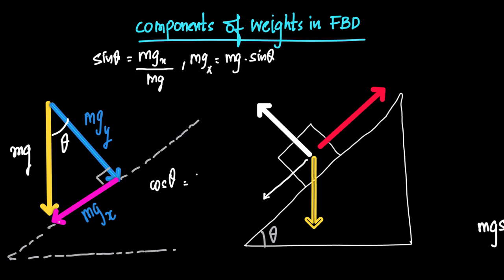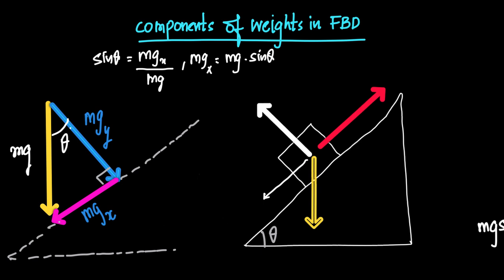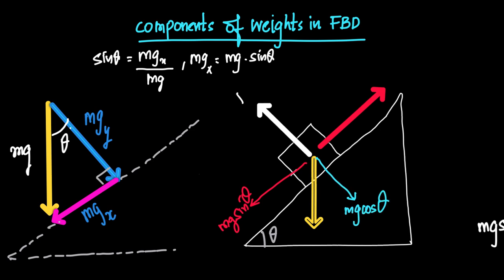Similarly, cos theta equals mgy divided by mg, the hypotenuse. Therefore mgy can be written as mg cos theta. So this component mg sin theta acts along the inclined surface, and the component mg cos theta acts perpendicular to the inclined surface. And we also have the force of kinetic friction.